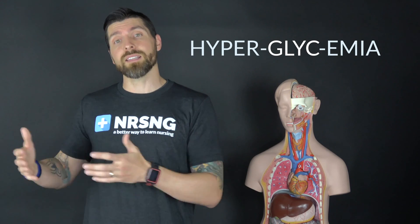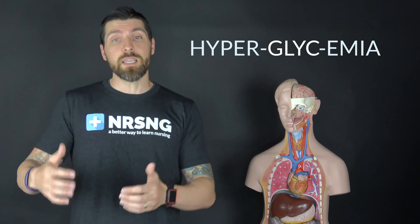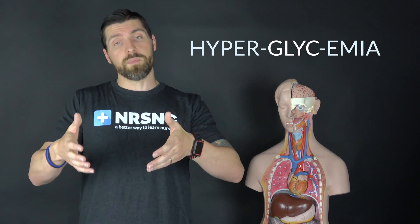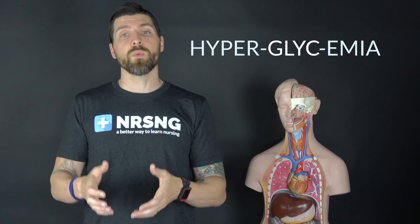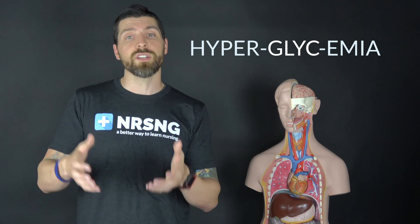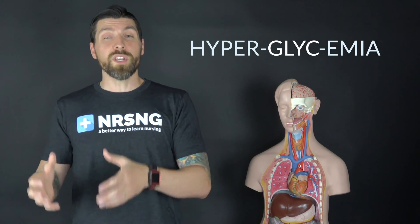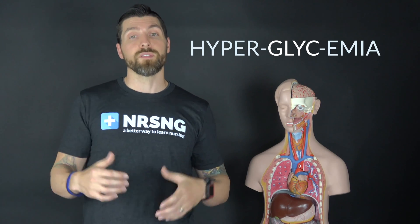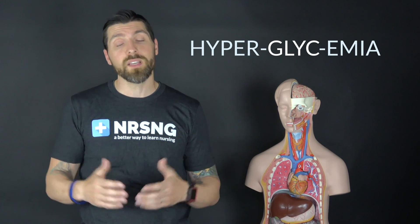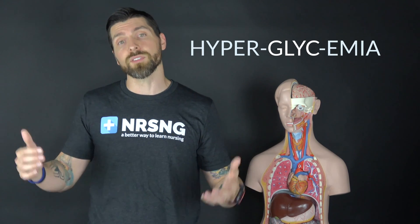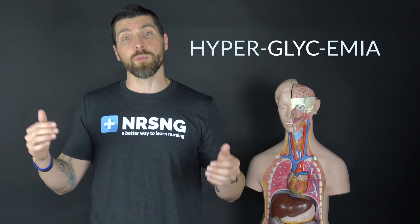Now if there's a prefix in there, you have to take that into consideration too. So if I have the term hyperglycemia — -emia is a condition of blood, and glyce means glucose, so we know that we're dealing with a condition of blood sugar. Now we know that hyper means excessive, so hyperglycemia really just means high levels of glucose or blood sugar.